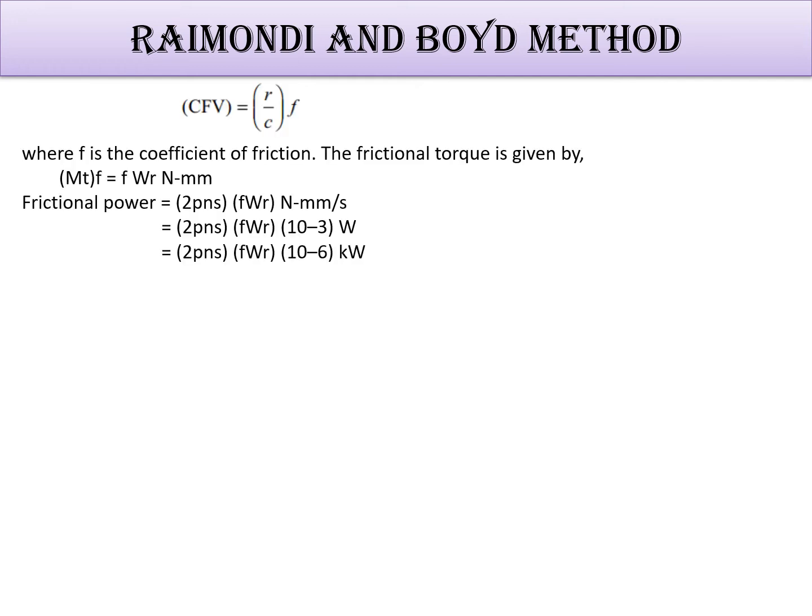So f is the coefficient of friction and friction torque is given by Mtf equals fWr newton-millimeters. So this is how frictional power is calculated. Frictional power is 2πns fWr divided by 10⁶, which is in watts or kilowatts.